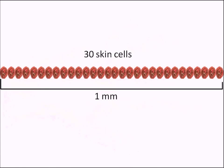If you have a look on a ruler, one millimeter is a tiny distance, but you could actually fit 30 skin cells in that distance. So that's how small skin cells are — no wonder you can't see them.